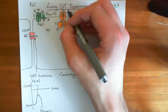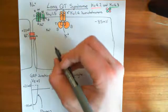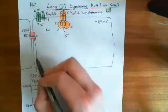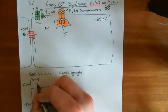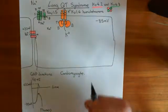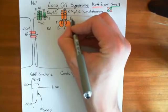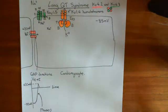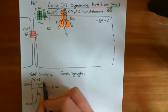Moving positive charge out of the cell favors repolarization, because it reduces the electrical potential in the intracellular compartment and raises it in the extracellular compartment, causing the electrical potential to go back down. This current is known as the transient outward current, often abbreviated as Ito — I for current, to for transient outward — and it stops very quickly. These channels activate and then close again rapidly.